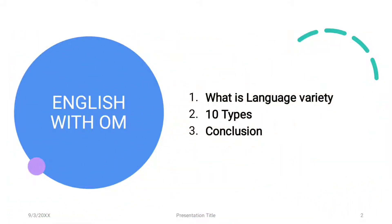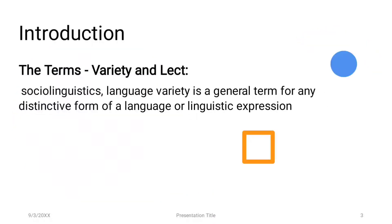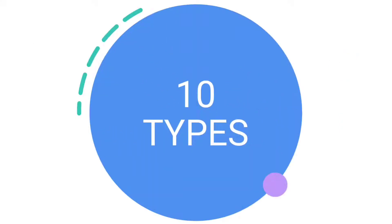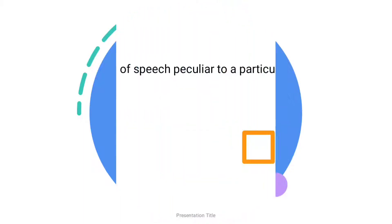In this video we will talk about language variety. Language variety is a general term for any distinctive form of language or linguistic expression. Linguists commonly use language variety, or simply 'variety', as a cover term for any of the overlapping subcategories of language, including dialect, idiolect, register, and sociolect.